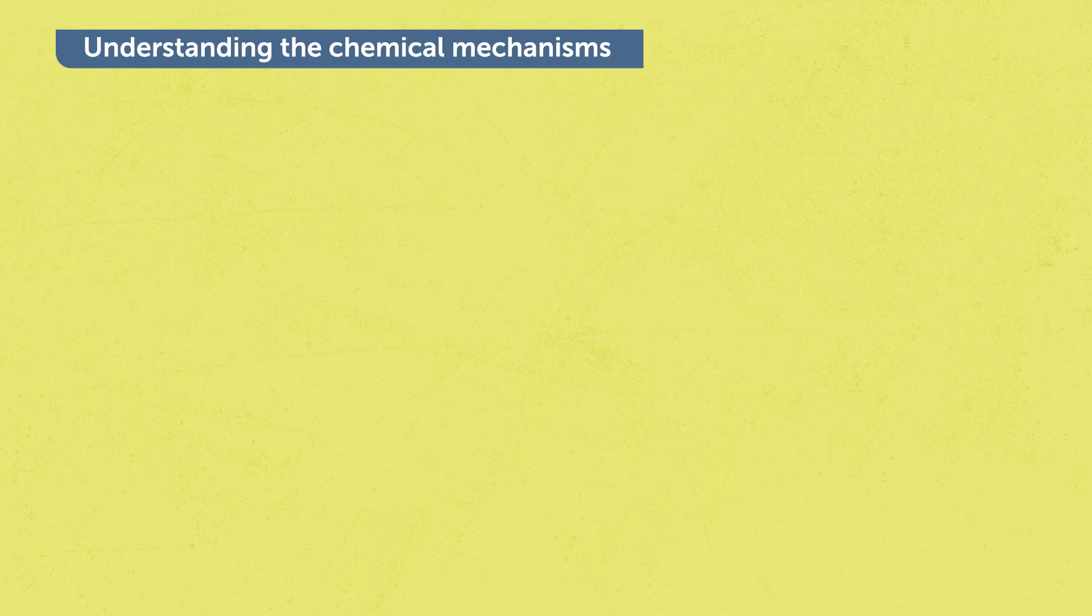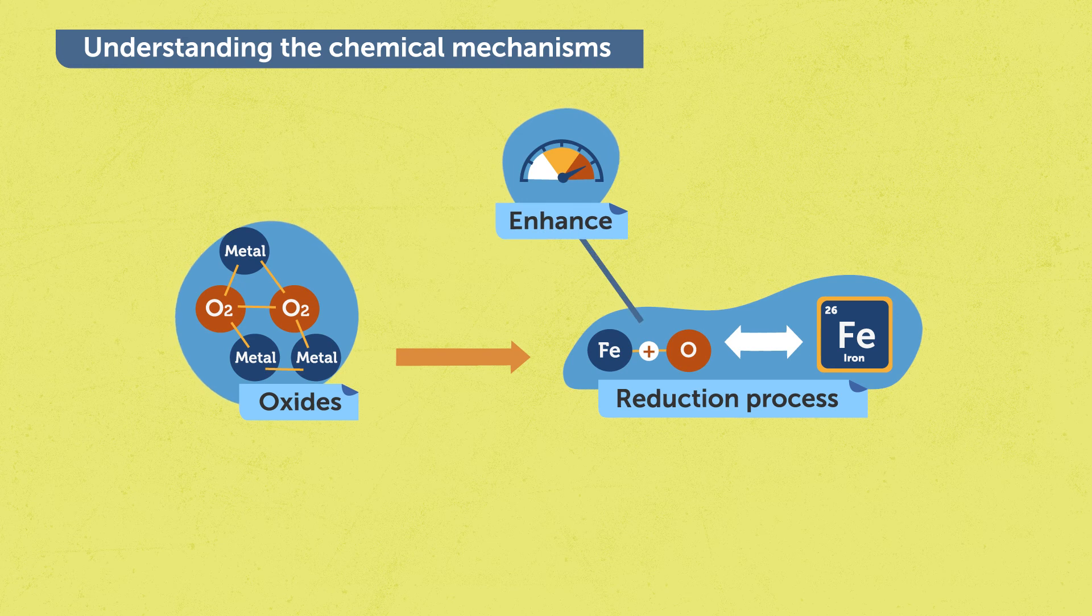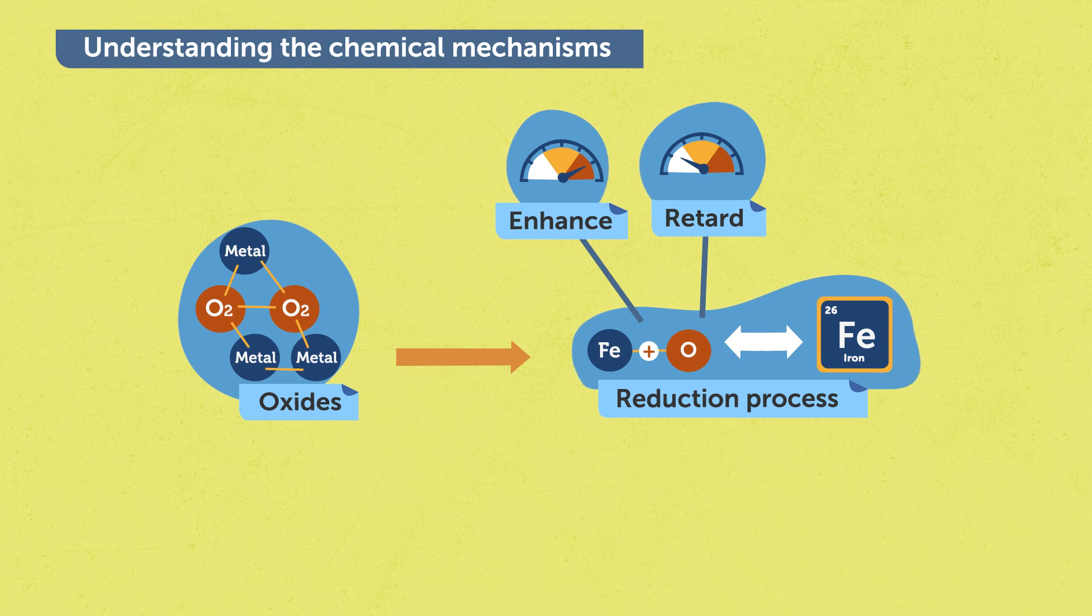We try to understand, for example, which oxides enhance or retard the reduction of iron oxide into iron and the role of these elements